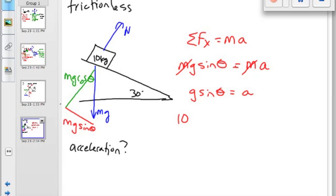G is 10. Sine of our angle, 30 degrees, equals A, and that is 5.